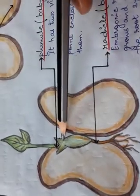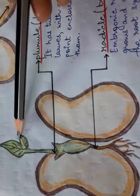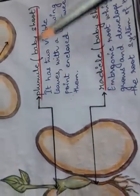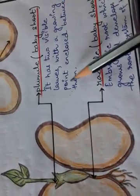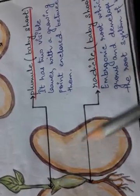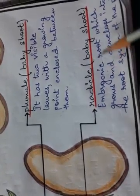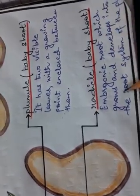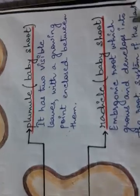The plumule produces the shoot — can you see the plumule part here? That is the baby shoot; it has two visible leaves with a growing point enclosed between them. And this is the radicle part, the embryonic root, which grows and develops into the root system of the plant.